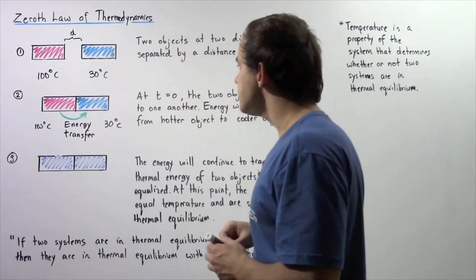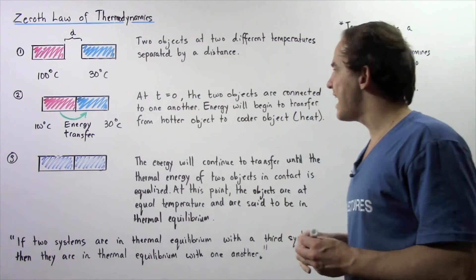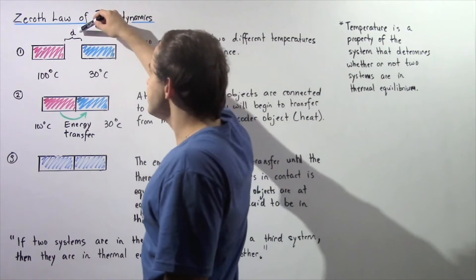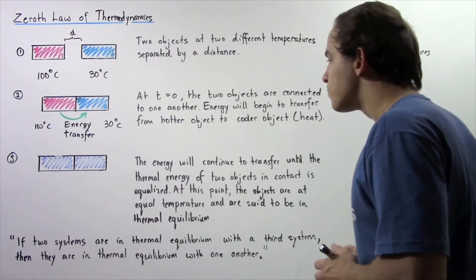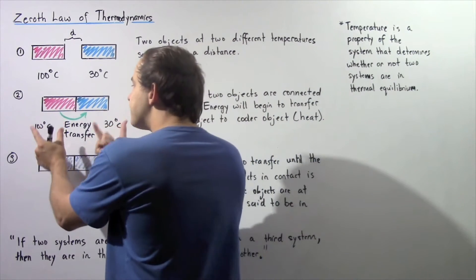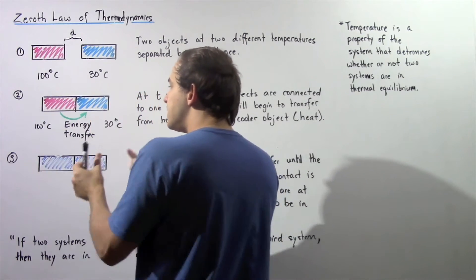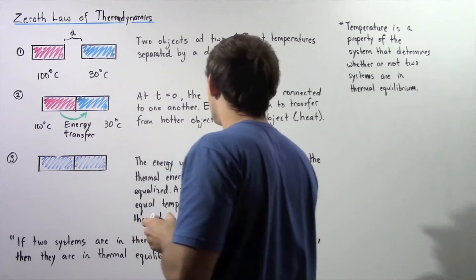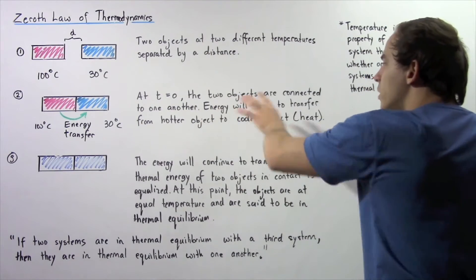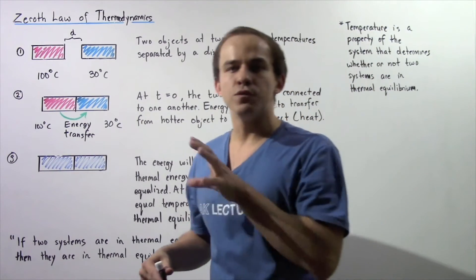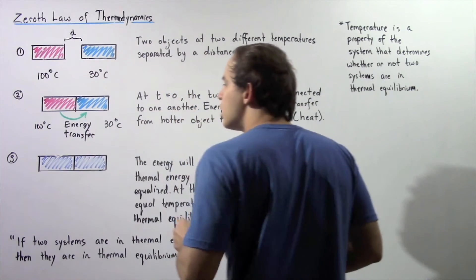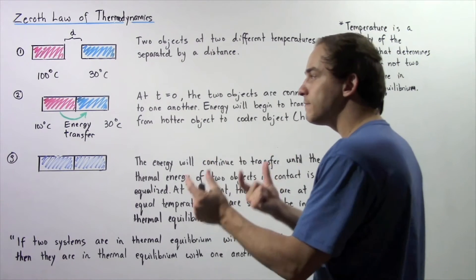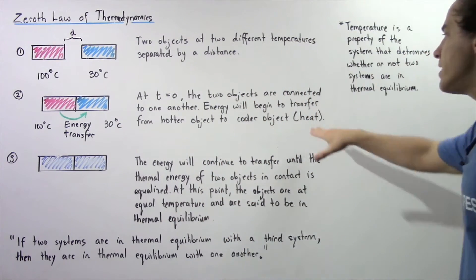Now let's examine diagram two. At time equals zero seconds, the two objects are connected to one another, so that the distance d becomes zero. Because there is a difference in temperature between the two systems, and system number one has greater thermal energy than system number two, energy will begin to transfer. Energy will flow from the hotter object to the cooler object, and this transfer of energy due to a difference in temperature is commonly known as heat.